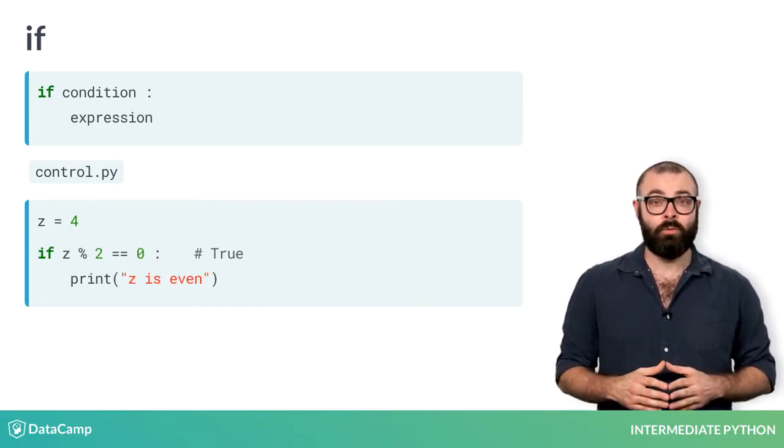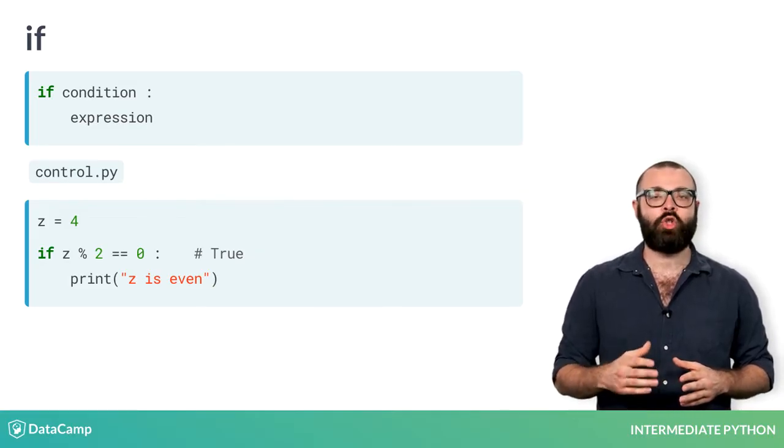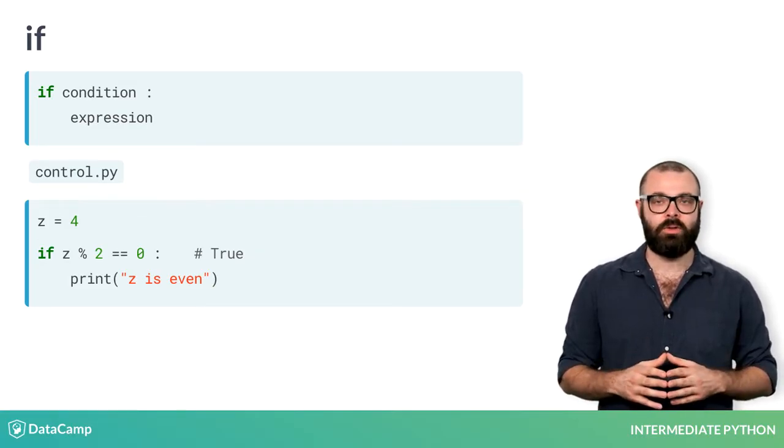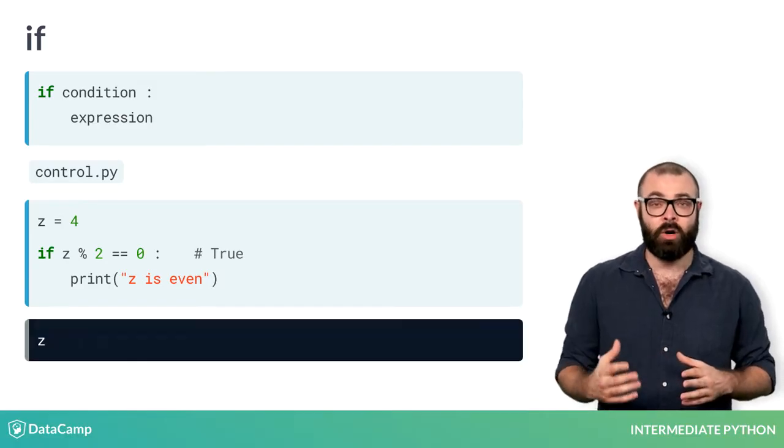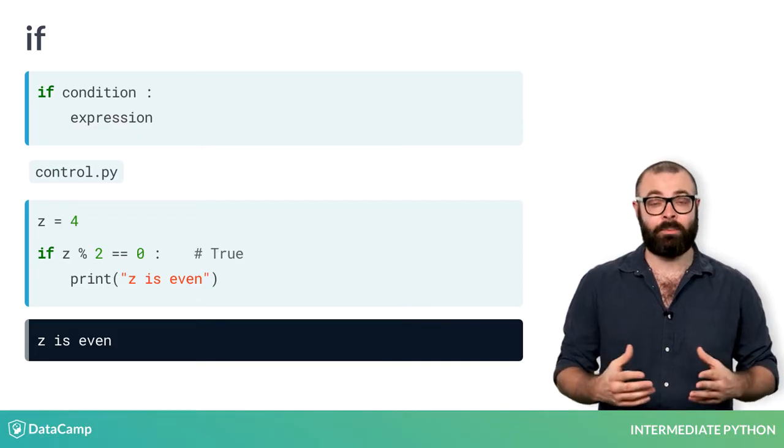Modulo operator 2 will return 0 if z is even. If you run this, Python checks if the condition holds. It's true, so the corresponding code is executed. Z is even gets printed out.